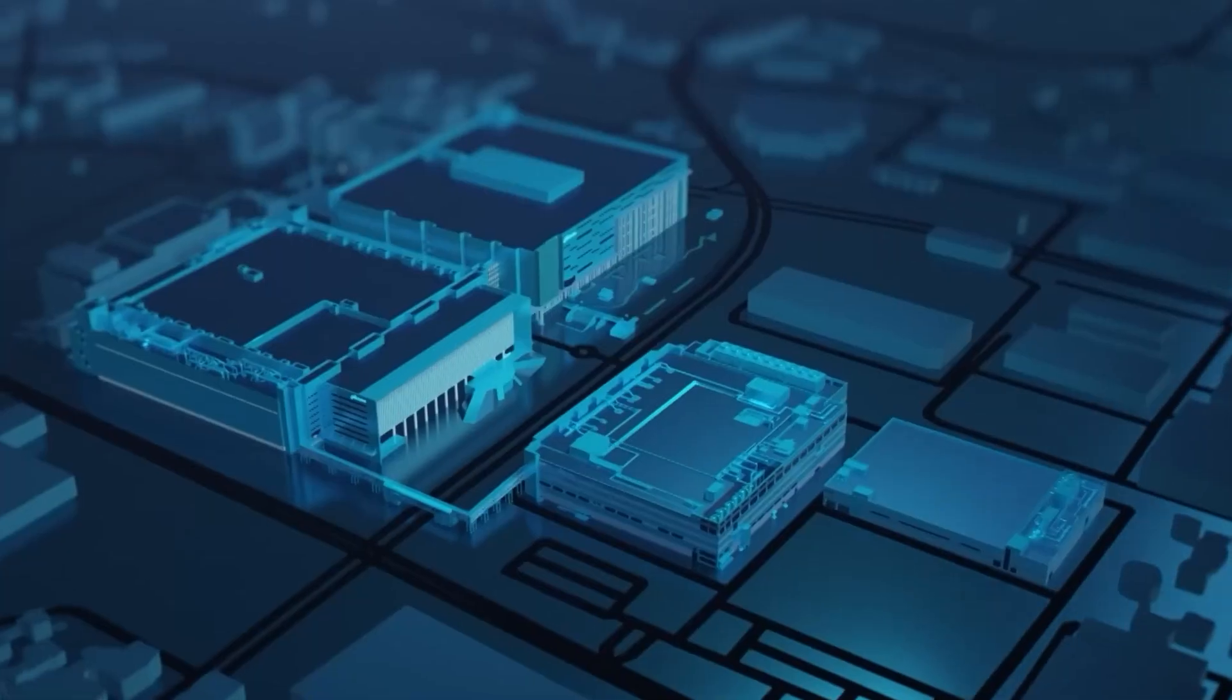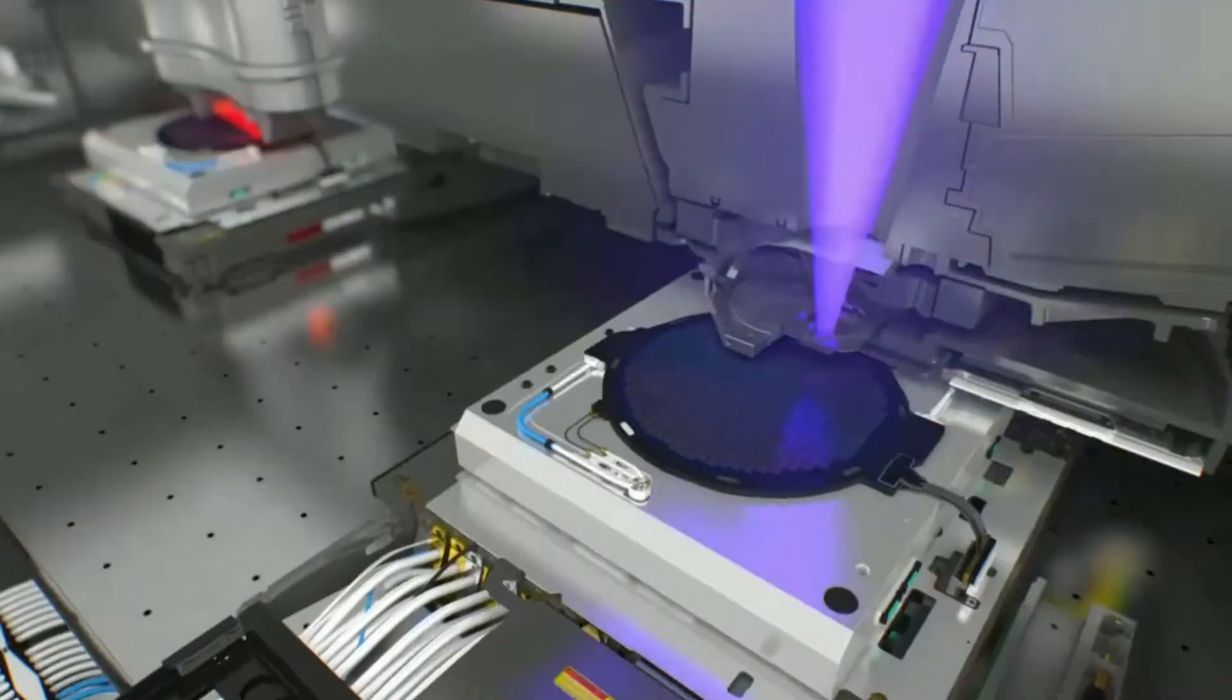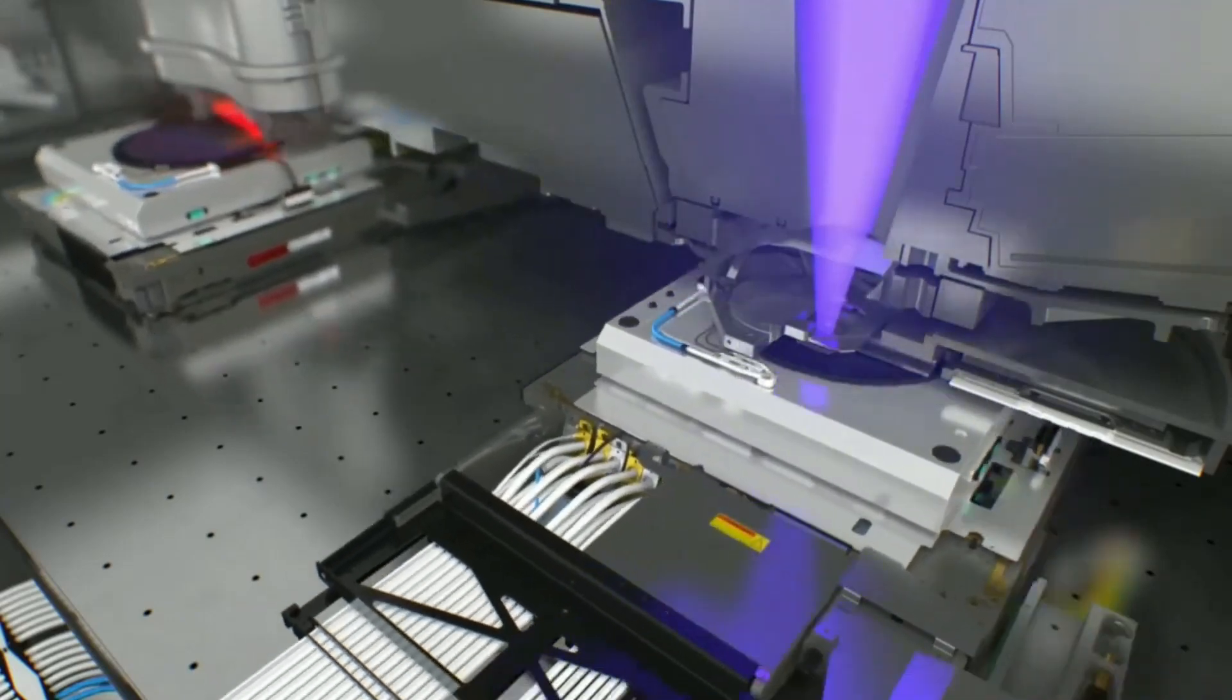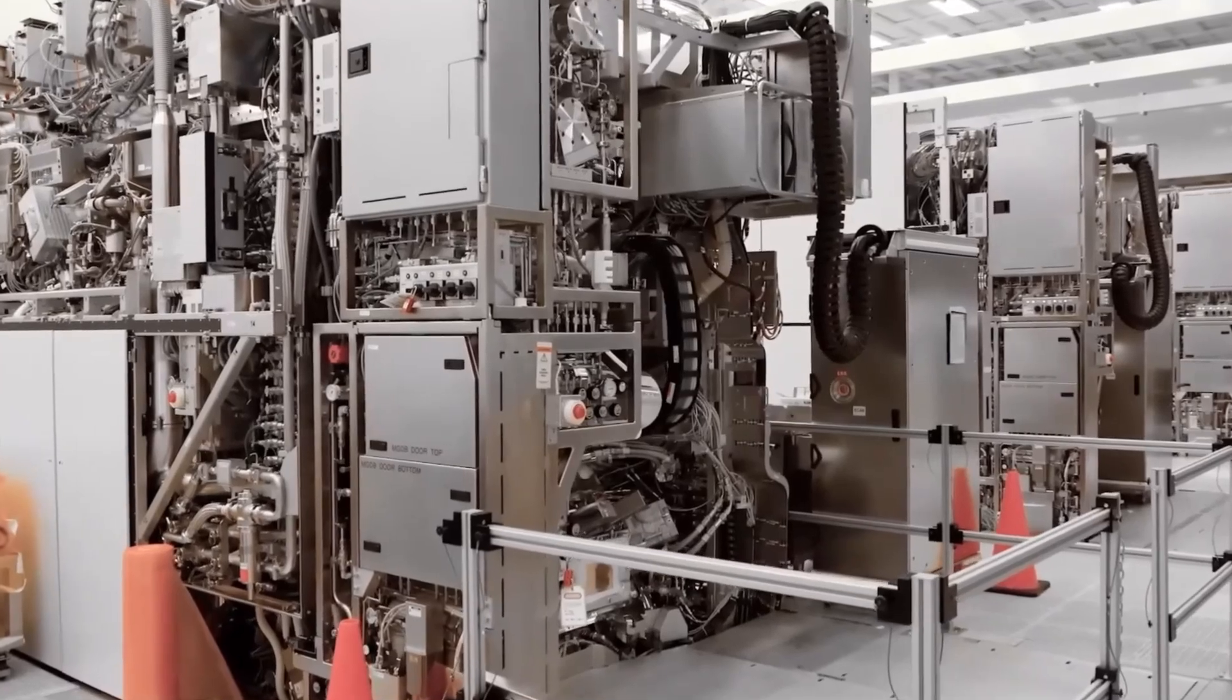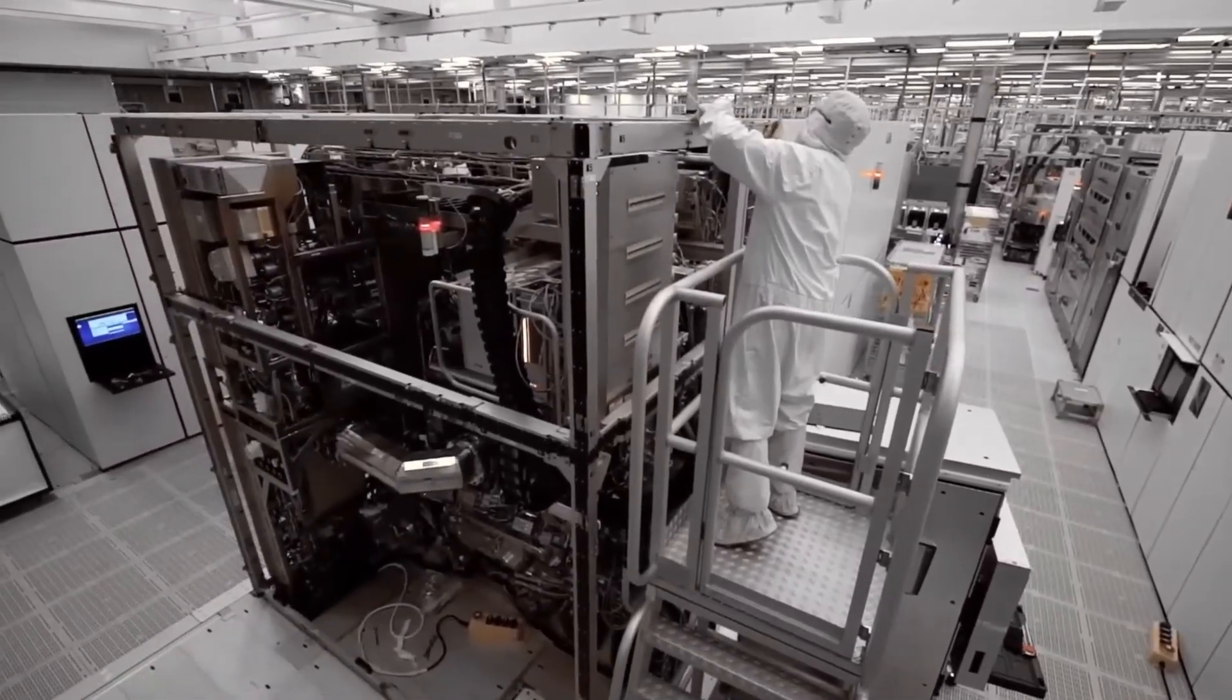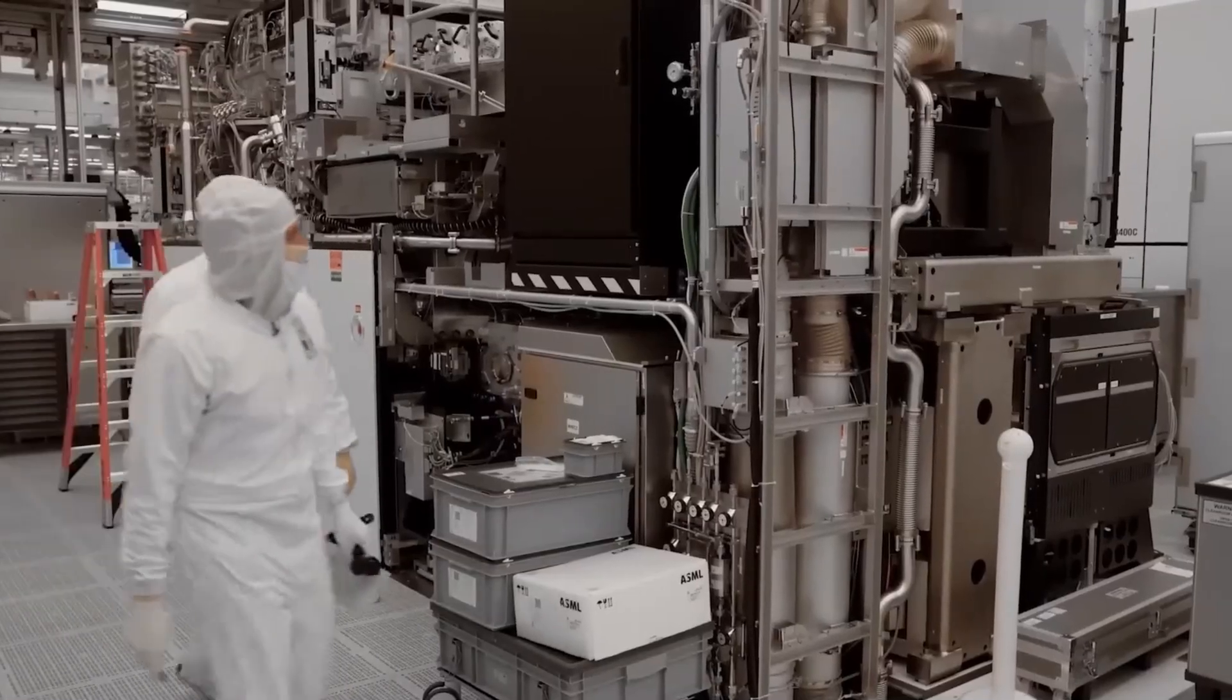Lithography, the unsung hero of modern chip manufacturing, is where NVIDIA's intricate designs are brought to life with breathtaking precision. At the heart of this operation lie extreme ultraviolet EUV machines. Technological marvels capable of etching patterns that define the future of computing power. These machines are no ordinary tools. They're the pinnacle of human engineering, boasting a price tag exceeding $150 million each, and requiring environments so clean even a single speck of dust can derail production.